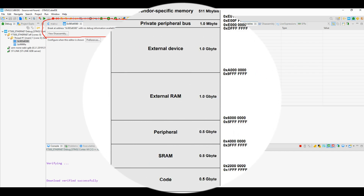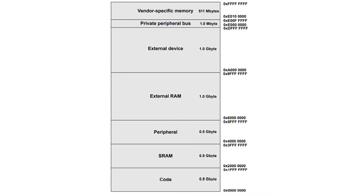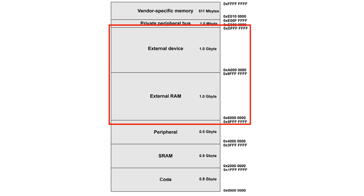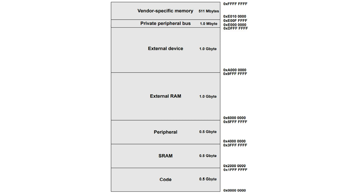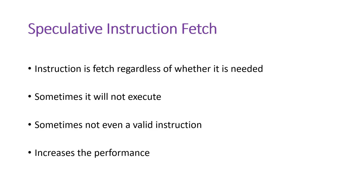Here is the memory map of Cortex-M7, and you can see that addresses from 0x60000000 to 0xE0000000 belong to the external memories. These addresses are already available in the core, irrespective of whether the memory is physically available or not. So in case we are not using any external memory, we must block access to these locations to prevent speculative reads to external memories.